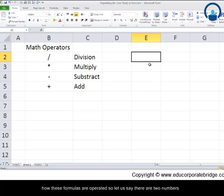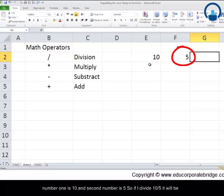Now let us take a quick example to understand how these formulas are operated. So let us say there are two numbers. Number one is 10 and the second number is 5. So if I divide 10 by 5, it will be equal to 2.